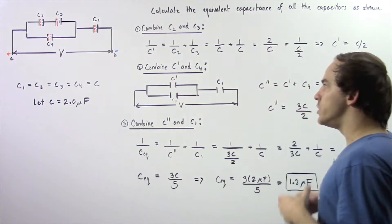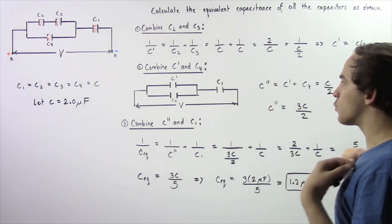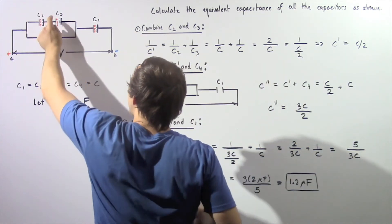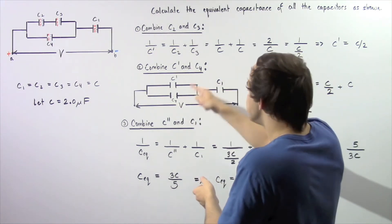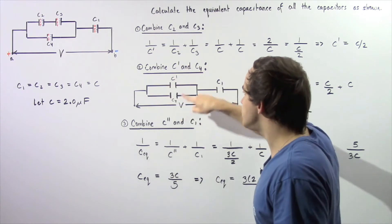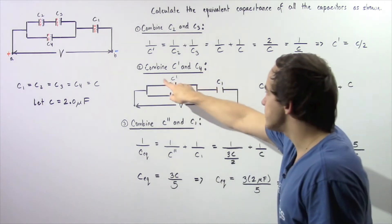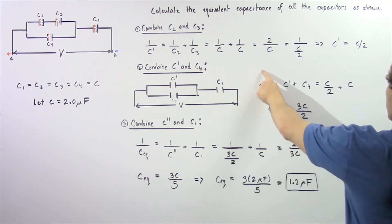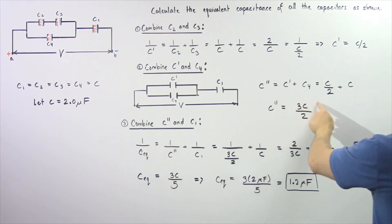In step two, we combine C prime and C4, which are arranged in parallel relative to one another. C prime is the equivalent capacitor we found in step one. Because they are in parallel, we simply sum the two capacitances. Calling this C double prime, we get C double prime equals C prime plus C4, which equals C over two plus C, giving C double prime equal to three C divided by two.